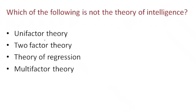Which of the following is NOT a theory of intelligence? Unifactor theory, two-factor theory, theory of regression, or multi-factor theory? Theory of regression is the correct answer.